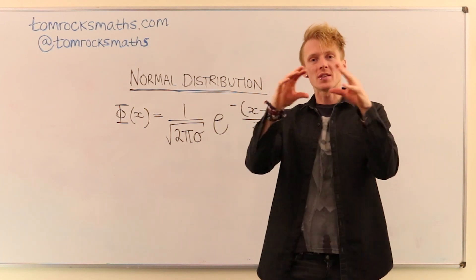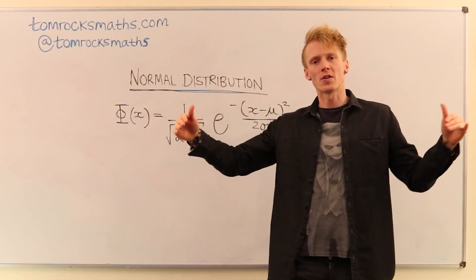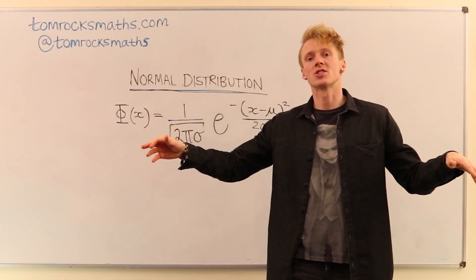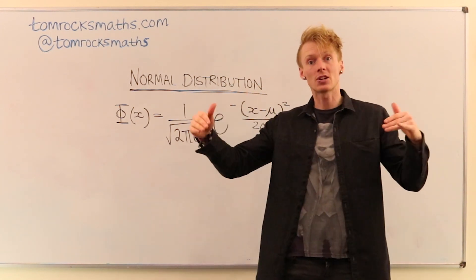And most other data points tend to cluster around this value. And then as you move further and further away from the average you tend to get fewer and fewer points. So the probability decreases.